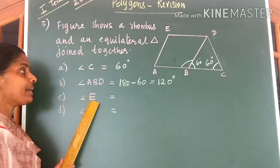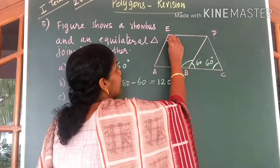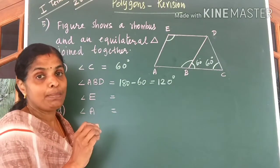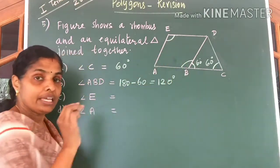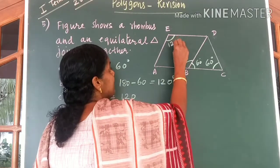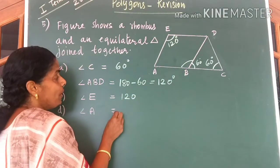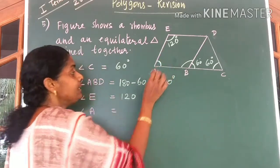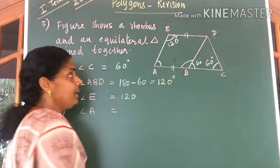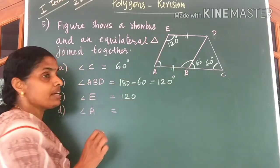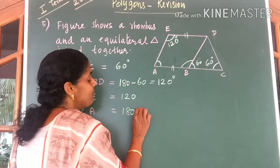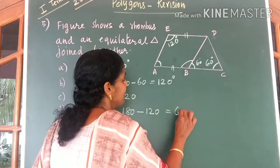Question C: find angle E. We are given ABDE to be a rhombus. In a rhombus, opposite angles are equal, so angle E is equal to 120 degrees. Question D: what is angle A? In a rhombus, the two lines are parallel and co-interior angles are supplementary. So angle A is equal to 180 minus 120, which is equal to 60 degrees.